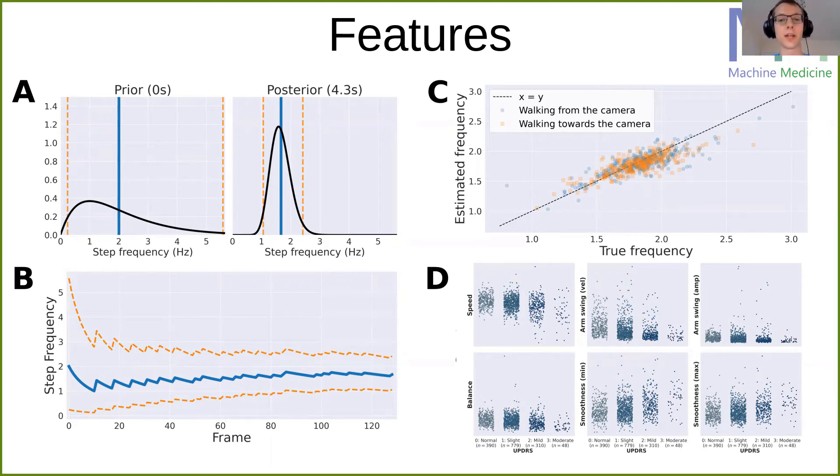And also with our other features such as arm swing or balance or the smoothness of movement, we see the feature values, they differ quite a lot between different severities of gait impairment.